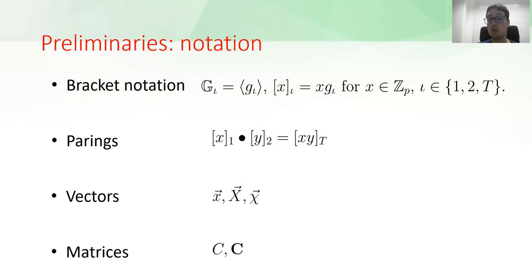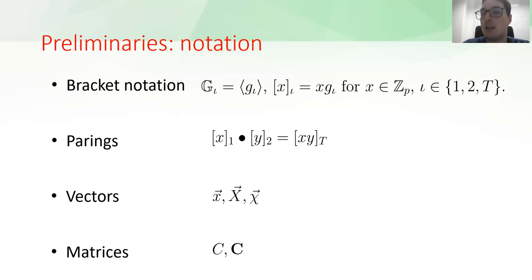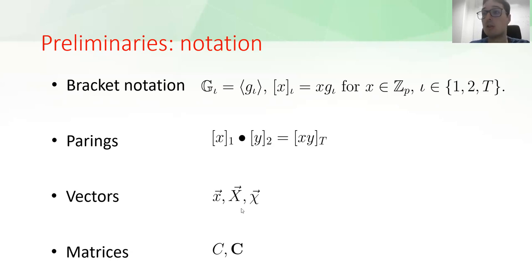Let's start with some notation. We assume throughout the paper that we are using type 3 pairings, meaning we suppose no efficient isomorphism exists between group 1 and group 2. We use bracket notation, so [x] denotes the exponentiation of x with respect to a fixed generator. The big circle denotes the pairing operation. We indicate vectors with arrows and matrices with upper-case letters without arrows.